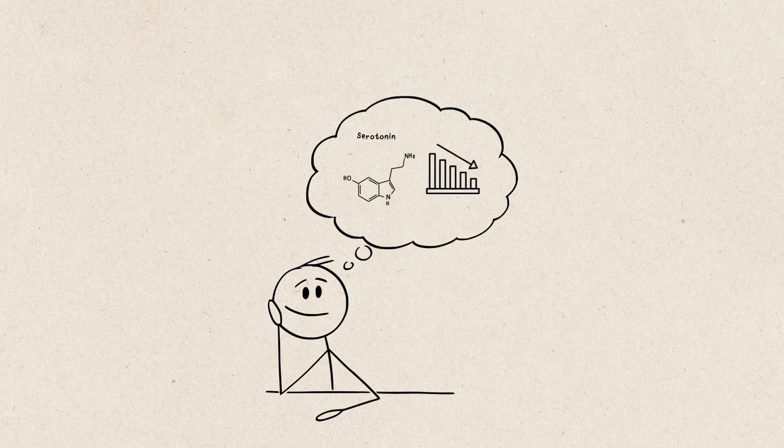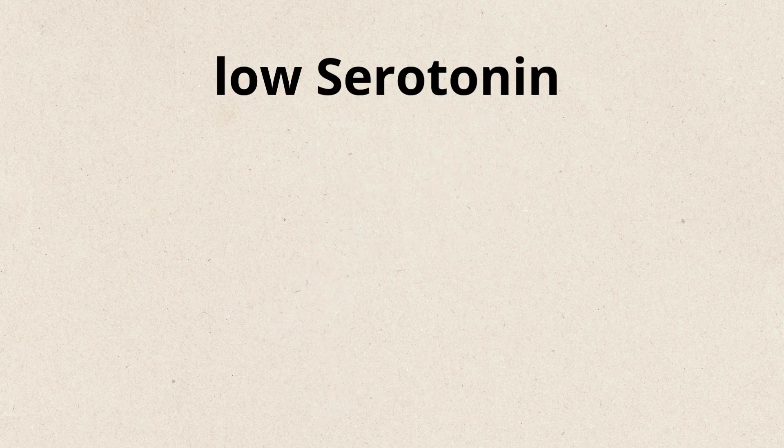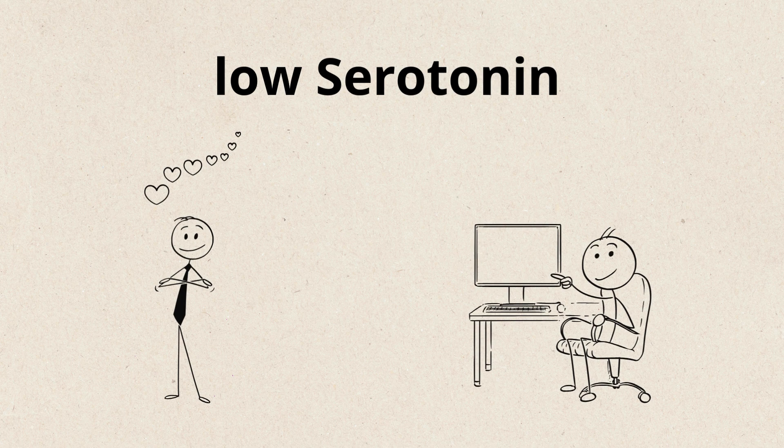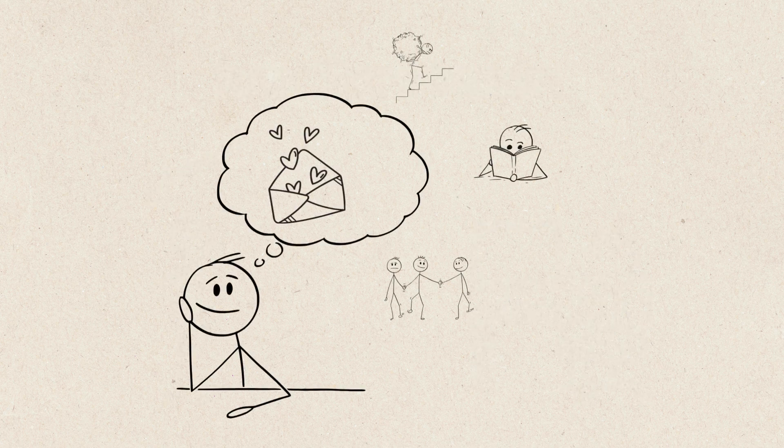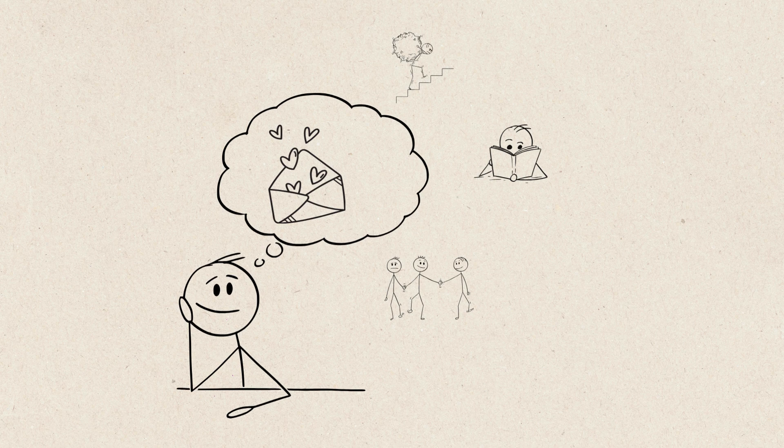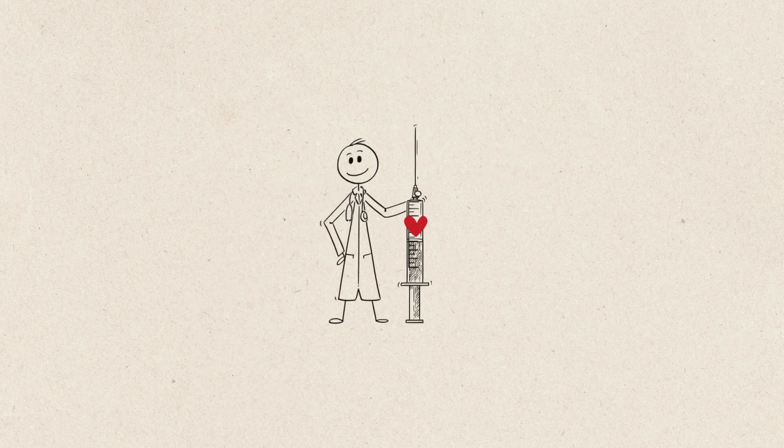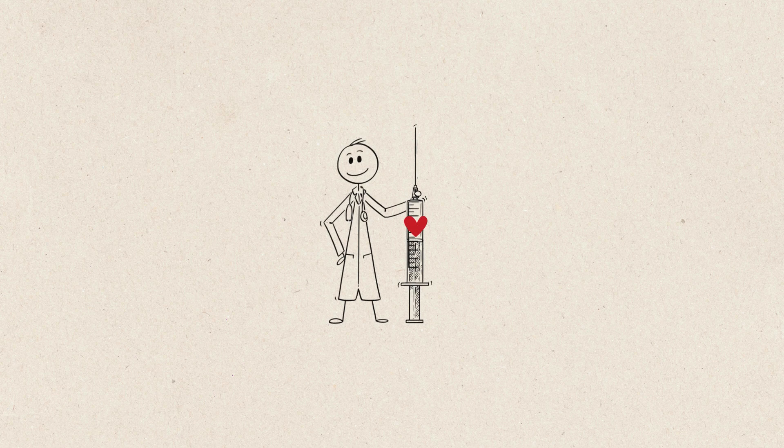Serotonin levels drop. This explains those obsessive thoughts. Studies show that people in the early stages of love have serotonin levels similar to those with OCD. Your brain is literally prioritizing thoughts of your crush over everything else. That's why falling in love feels like an addiction, because, in a way, it is. Your brain is feeding you a rush of chemicals that keep you hooked.